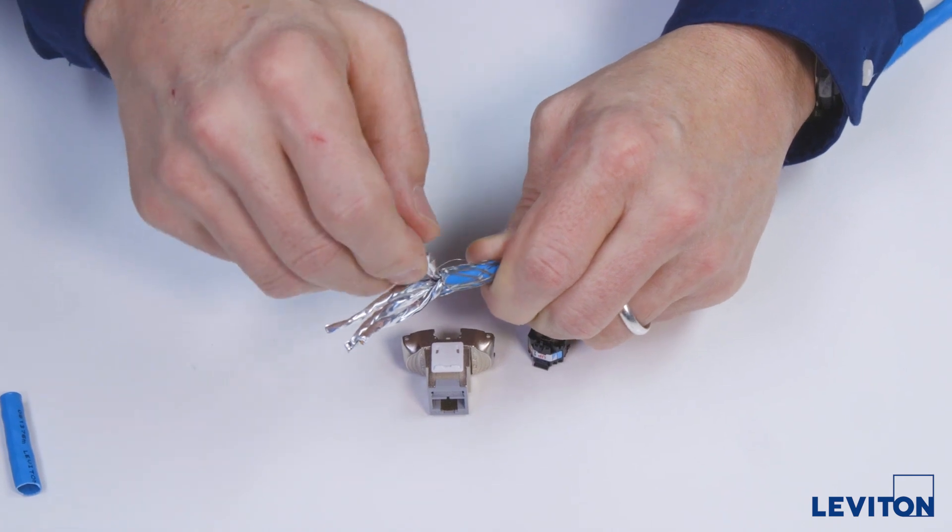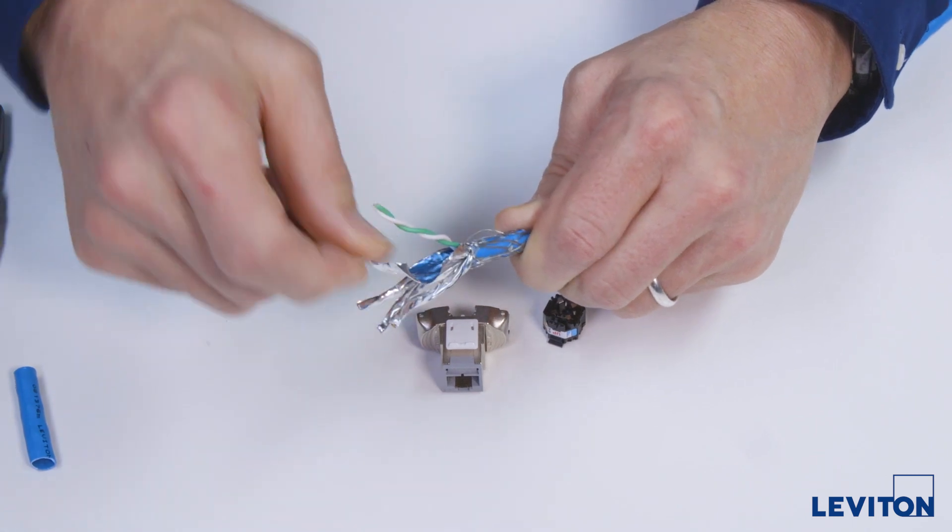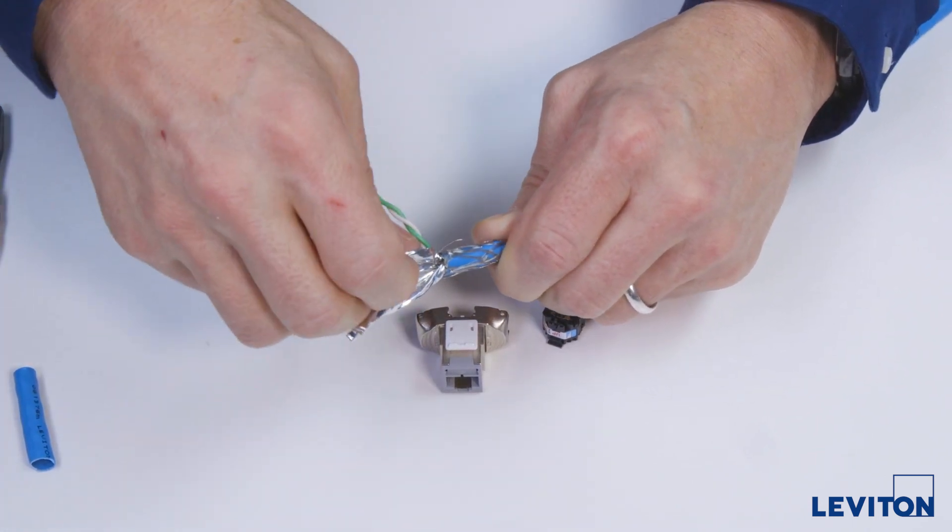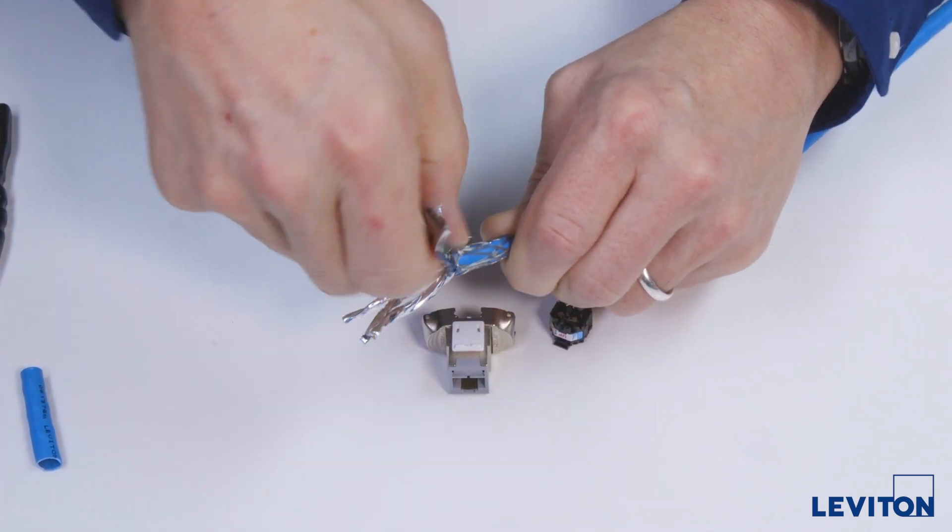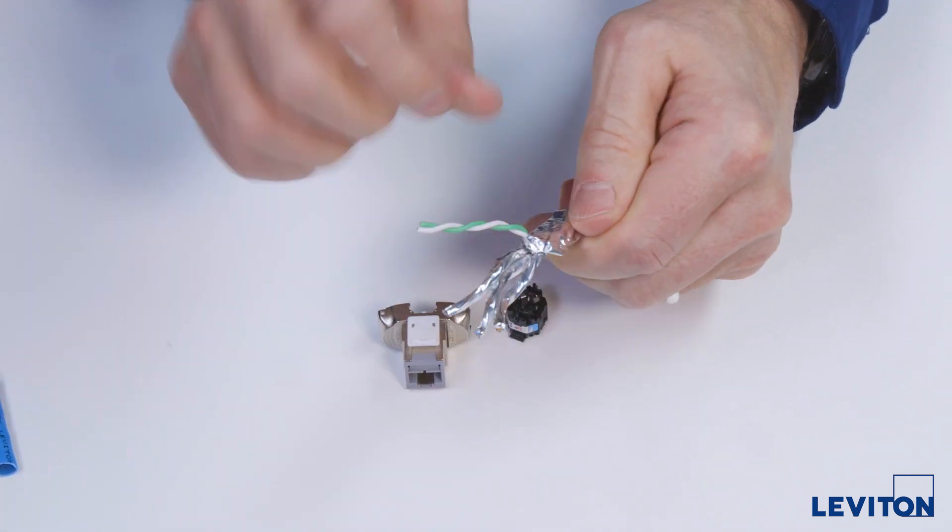With this cable construction, you will see each twisted pair has its own foil. Open up the foil on the green pair. Put a half twist in it to ensure the metal side of the foil is facing out, then lay it flat over the mesh braid along the cable jacket.